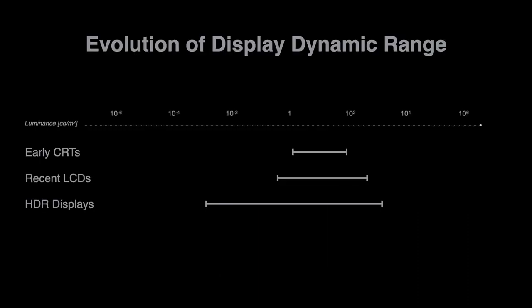Display capabilities are always improving, reaching unprecedented dynamic ranges with higher peak brightness values and lower blacks. Newer OLED display technology, for example, has an improved power-performance quality trade-off, allowing for regionally controlled brightness without lifting the blacks as you get when making an LED backlight brighter.